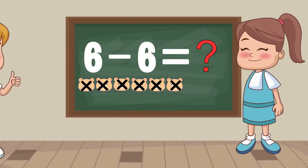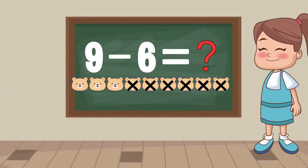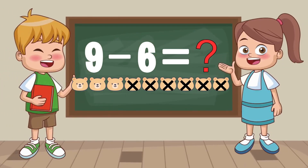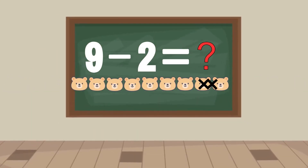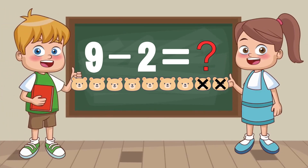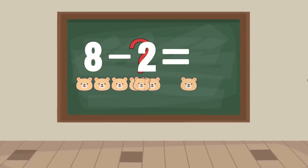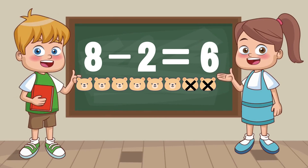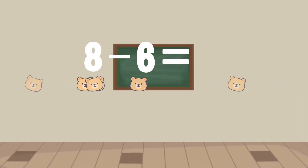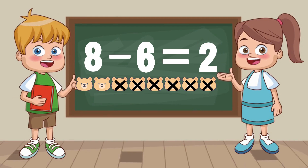6 minus 6 equals... 0. 9 minus 5 equals... 5. 9 minus 6 equals... 3. 9 minus 2 equals... 7.